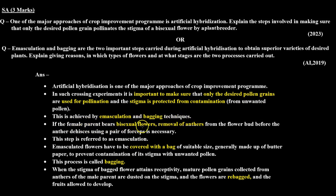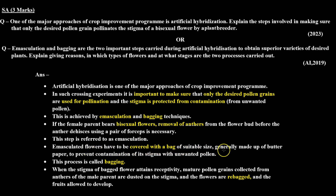If the female parent bears bisexual flowers, removal of anthers from the flower bud before anthesis using a pair of forceps is necessary. This step is referred to as emasculation. Emasculated flowers have to be covered with a bag of suitable size, generally made of butter paper, to prevent contamination of the stigma with unwanted pollen. This process is called bagging.